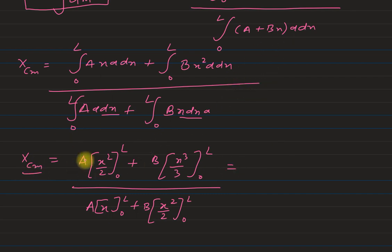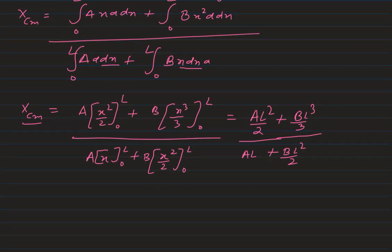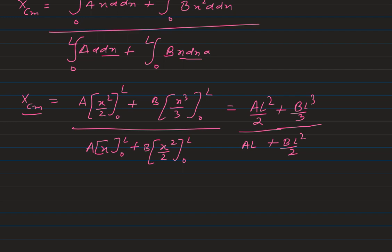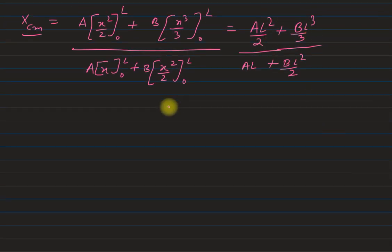So after putting all these limits, we can get the answer for x-coordinate of center of mass. So it becomes (aL²/2 + bL³/3) divided by (aL + bL²/2). So we simply need to simplify this further and we can easily get the answer which is given in the book. This is also the answer there.